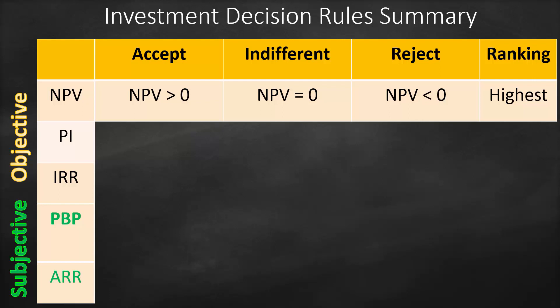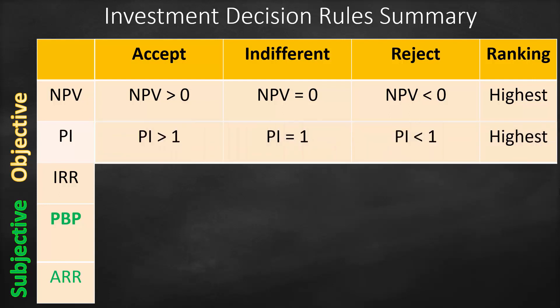The benchmark for net present value is zero, and that is why we call it an objective measure. For Profitability Index, the benchmark is 1. If Profitability Index is bigger than 1, we accept. If equal to 1, we are indifferent. If lower than 1, we reject.